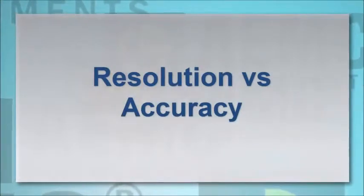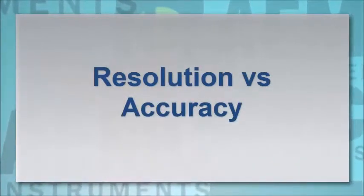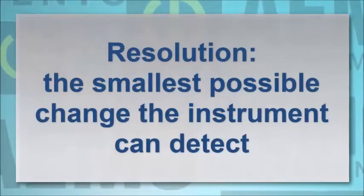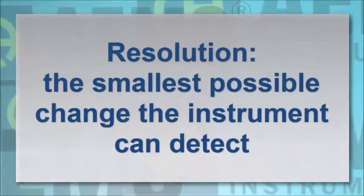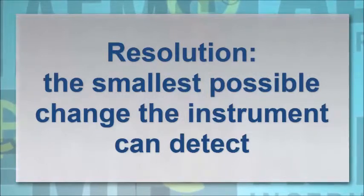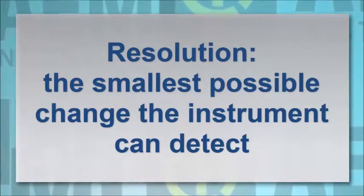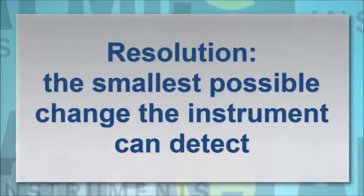Users often refer to resolution and accuracy interchangeably, but it's important to understand the distinction between these terms. Resolution defines the smallest possible measurement change the instrument can detect. Thus, a one-thousand-count digital multimeter can display a change of one-thousandth of a unit, while a ten-thousand-count instrument can detect one-ten-thousandth, in other words, ten times the resolution of the thousand-count multimeter.